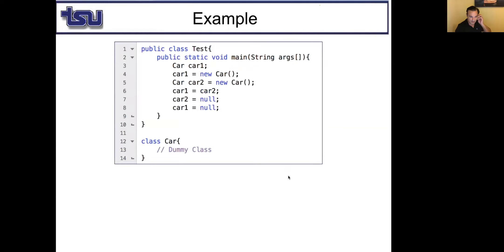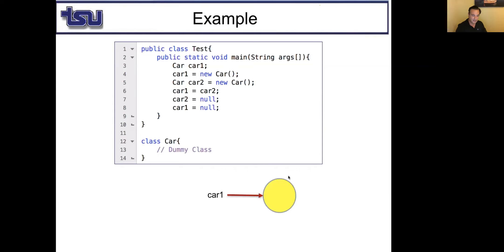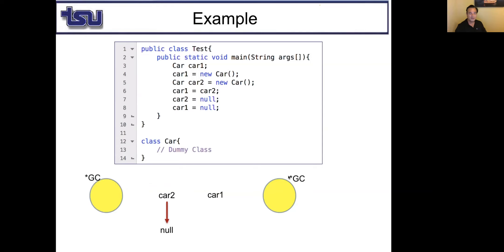Here is another example. First we have car1, which is null — I did not use the new keyword. Then I say car1 = new Car, allocating new memory space. Then I create car2 with new Car, so car2 points to another memory space. Now I say car1 = car2, meaning car1 will no longer point to its original memory space; it will point to the same memory space as car2. At this point no one can reach the original memory space — it will be marked for garbage collection right after line 6. Then I say car2 = null, but car1 still points to that space. Whenever we say car1 = null, it is no longer reachable and will be marked for garbage collection.